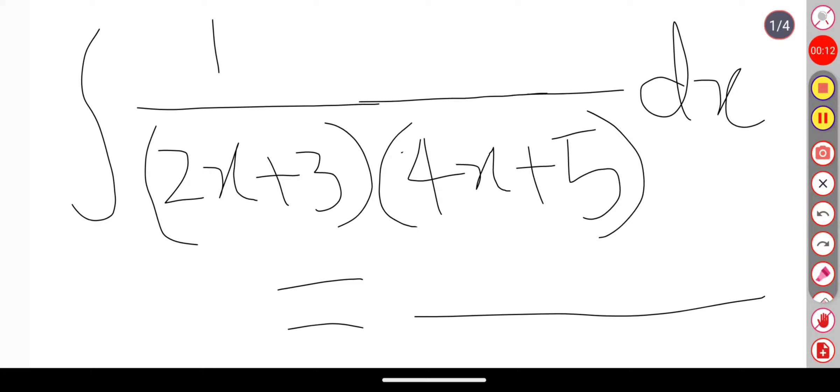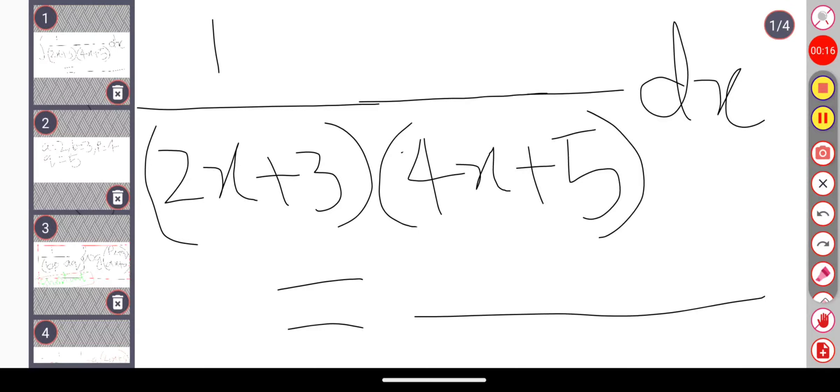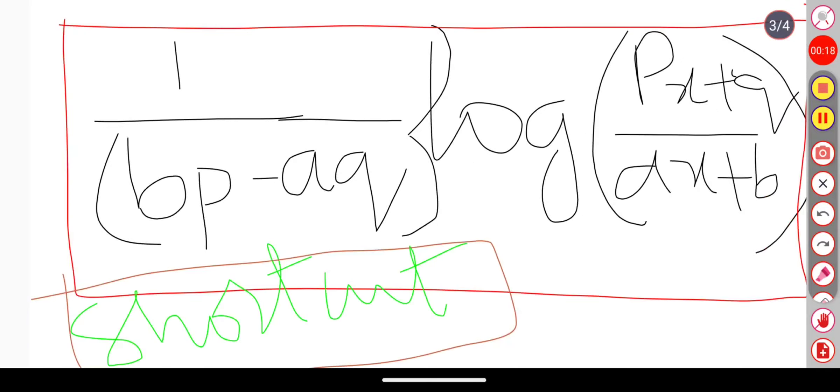In order to solve this problem, we have one shortcut present in our MZ and IIT. The shortcut is 1 by bp minus aq into log of tx plus q divided by ax plus b. So what we have to do?